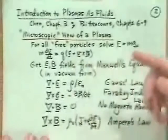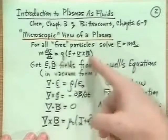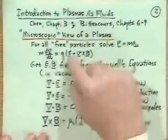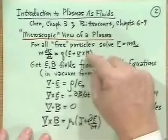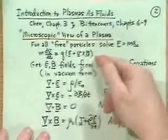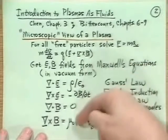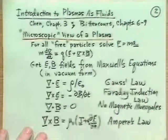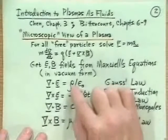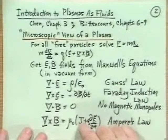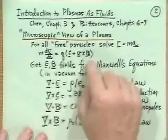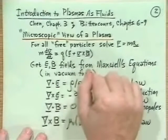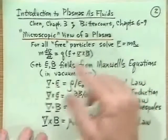If we want to calculate where each particle goes, we need the electric and magnetic fields from Maxwell's equations. But Maxwell's equations need the charge density and current density — and where do we get those? From where all the particles are: each one creates part of the charge density, and as they move, each creates a current density.